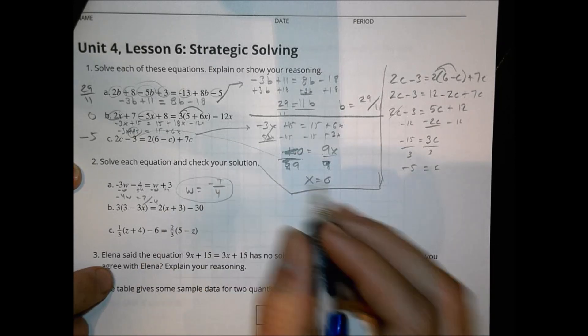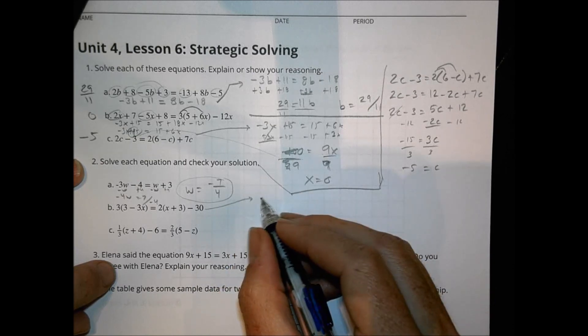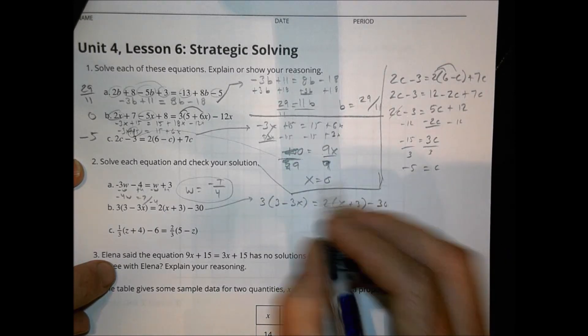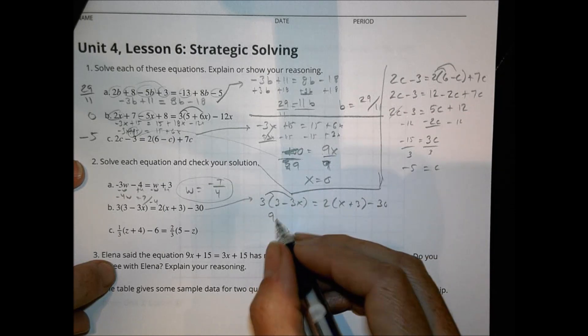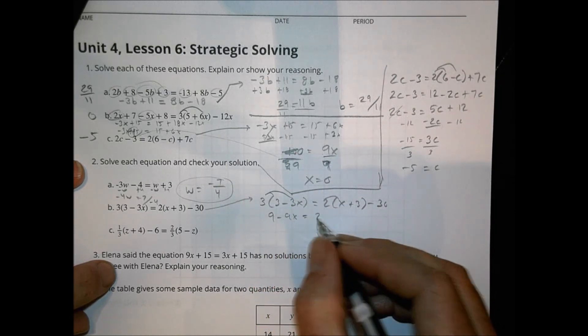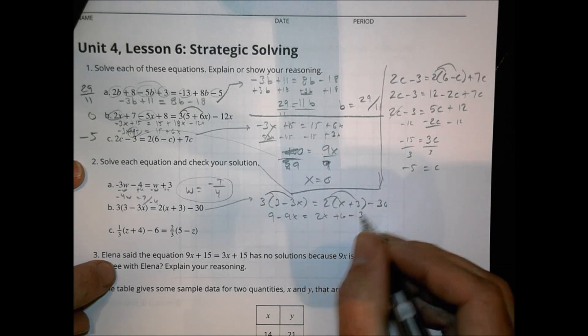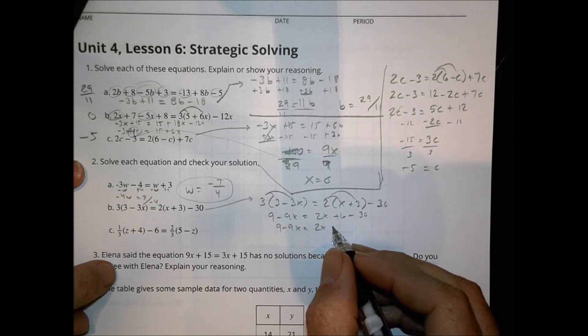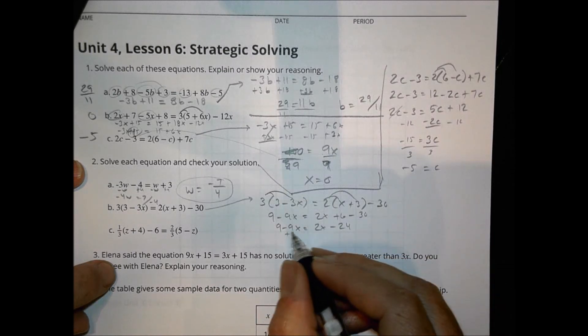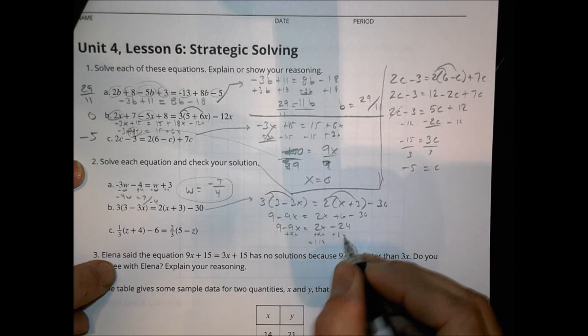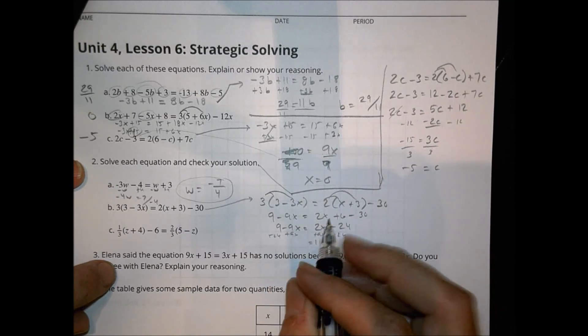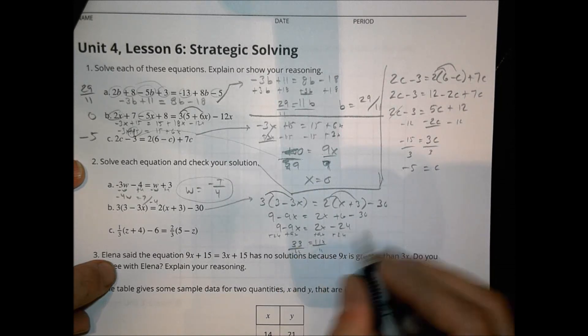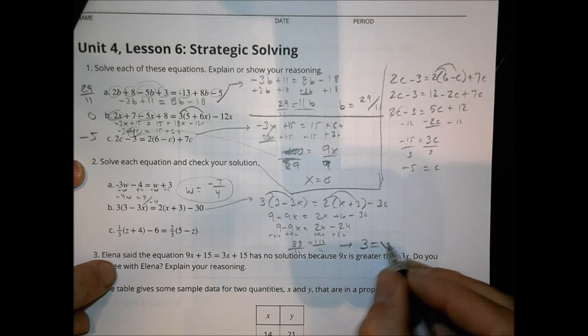For B, we have 3 times 3 minus 3X equals 2 times X plus 3 minus 30. Let's distribute first of all. So we have 9 minus 9X equals, distribute here, 2X plus 6 minus 30. Combine our like terms. 9 minus 9X equals 2X minus 24. I'm going to add 9X over here so that I have 11X. I'm going to add 24 over here. 24 plus 9 is going to be 33. And then divide both sides by 11. 33 divided by 11 is simply going to be 3. So X equals 3 for letter B.